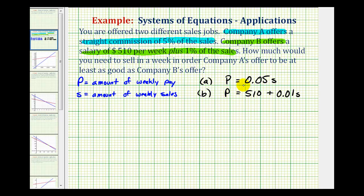What I mean by that is since P is equal to 0.05S, we can perform substitution into equation B by replacing P with 0.05S. And this will give us an equation with one variable which we can then solve.